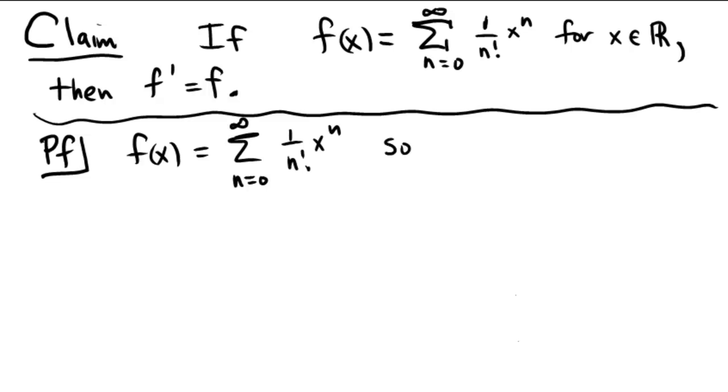What happens when we take a derivative using power rules? That would mean f prime of x would be equal to the sum of n equals 1 to infinity of n times 1 over n factorial x to the power of n minus 1.